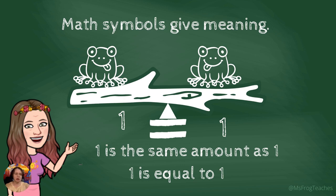We have a frog on one side and a frog on the other side. Well, one frog is equal to, or the same as, one frog.